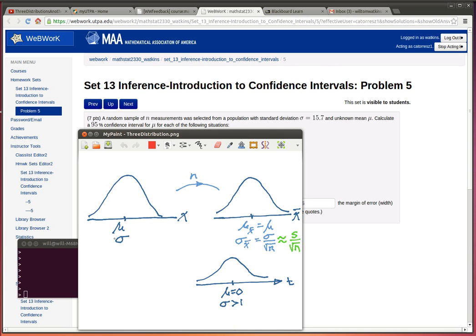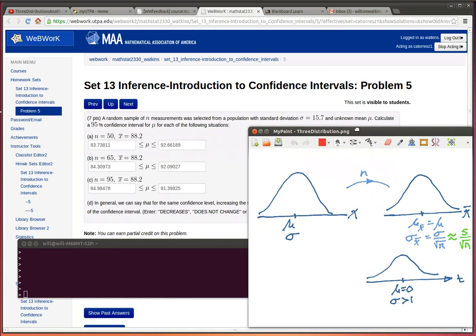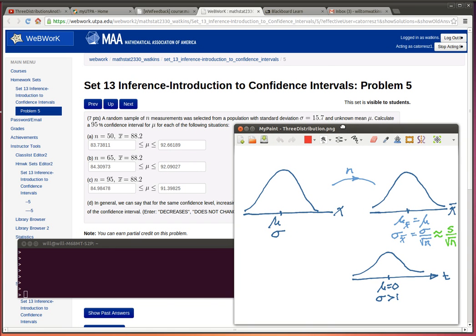Remember, if you know the population standard deviation, then this standard error is calculated as sigma divided by the square root of n. If we don't know this, then we're forced to use the sample standard deviation as an estimate, and therefore we have to use T. But in this case, we'll be able to use Z instead of T. So let's just work through a couple of these and see what's happening.